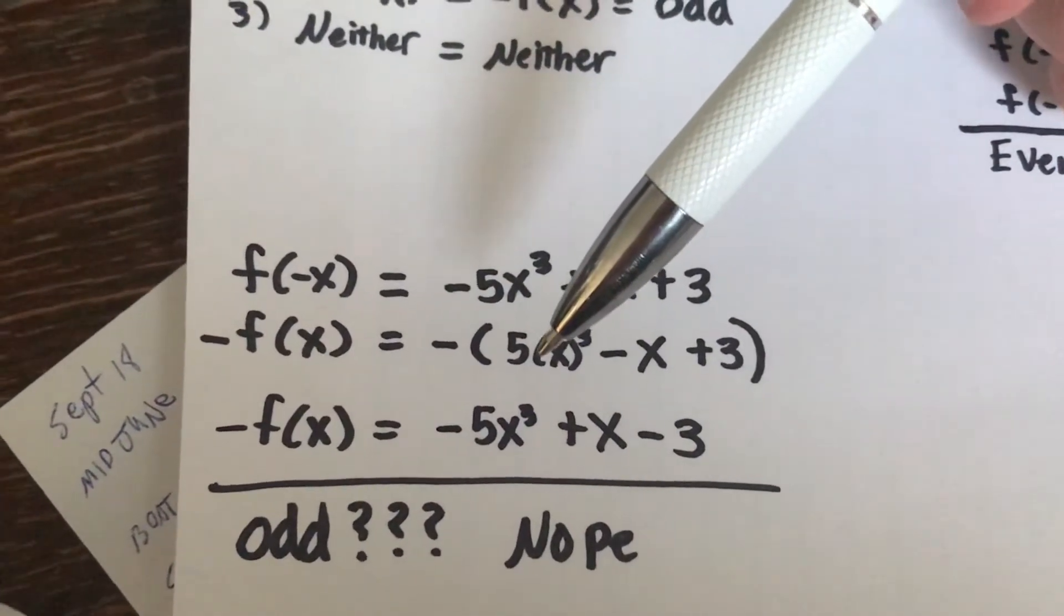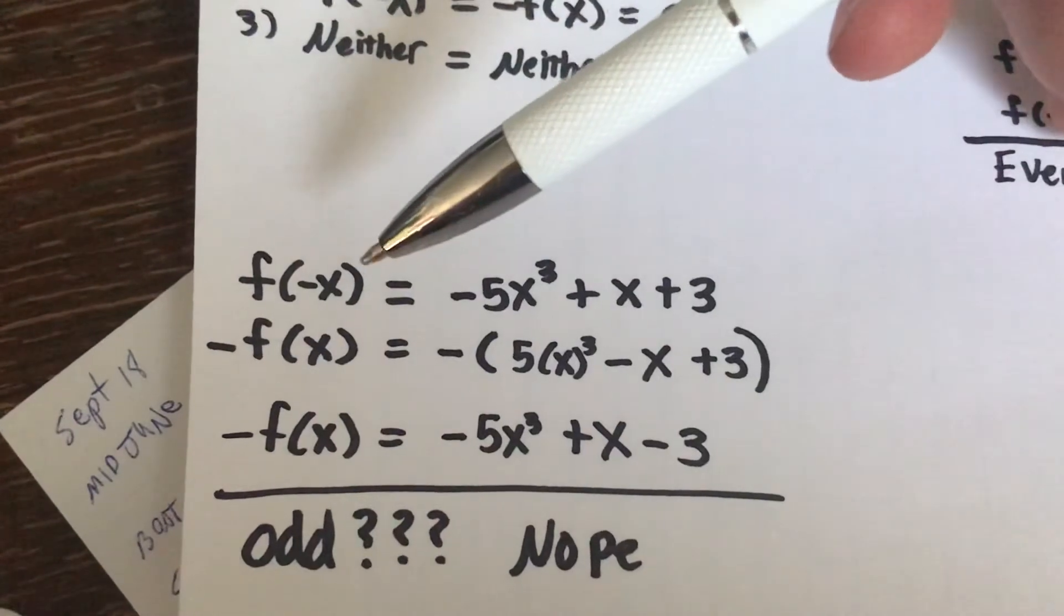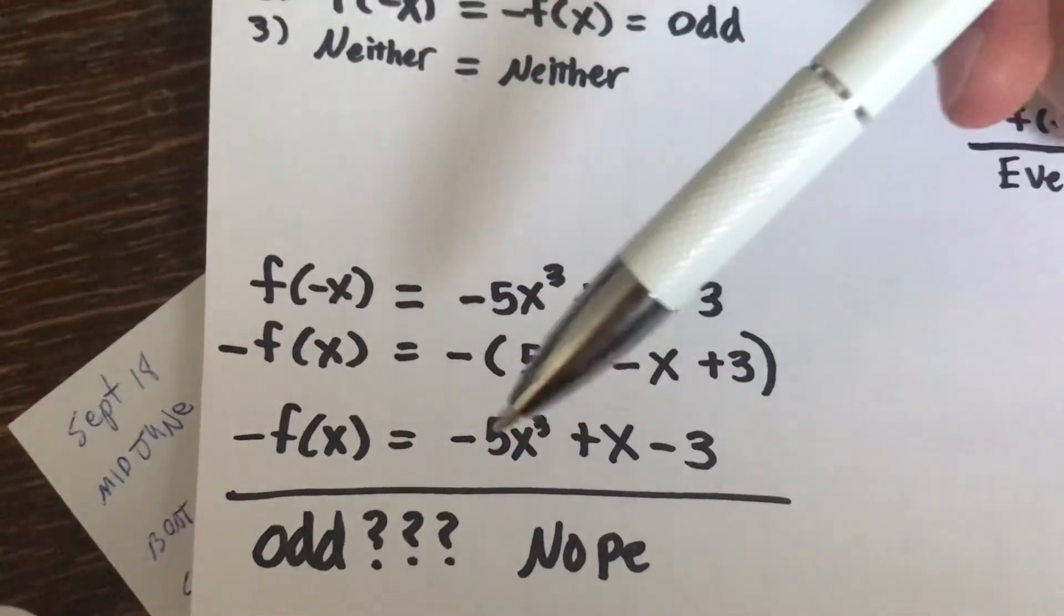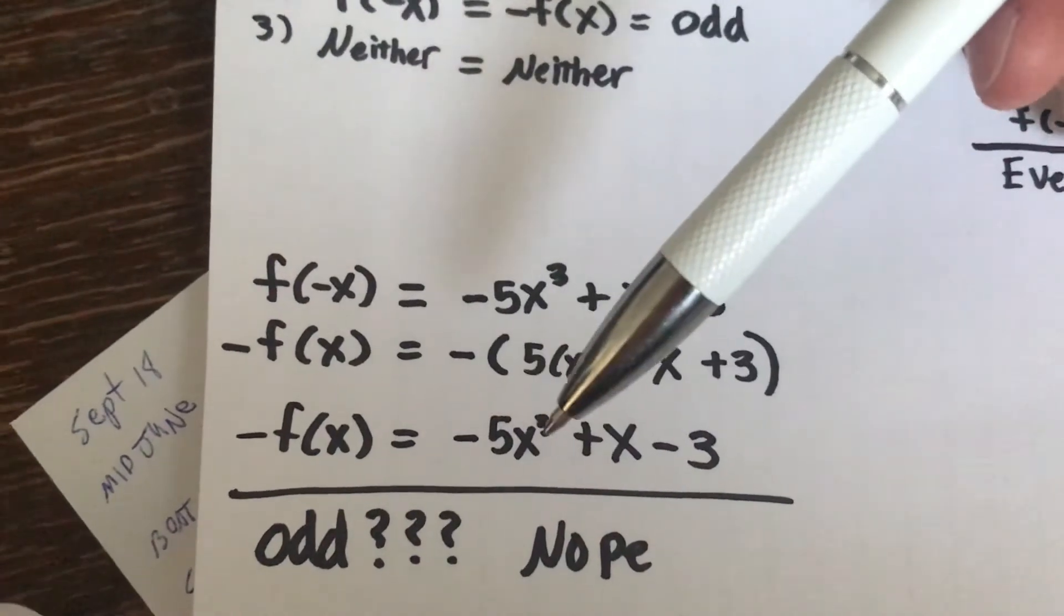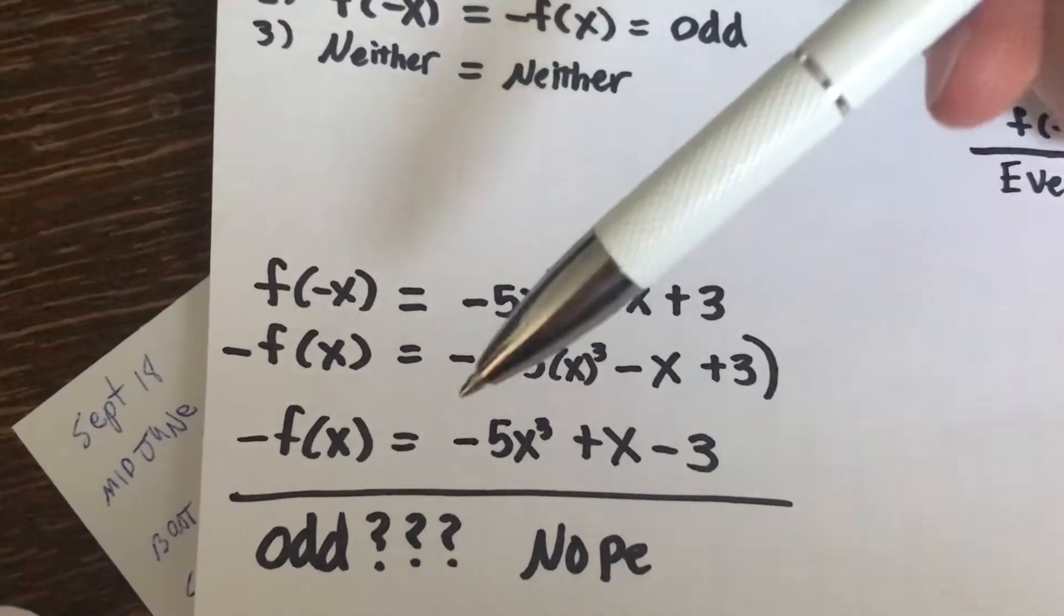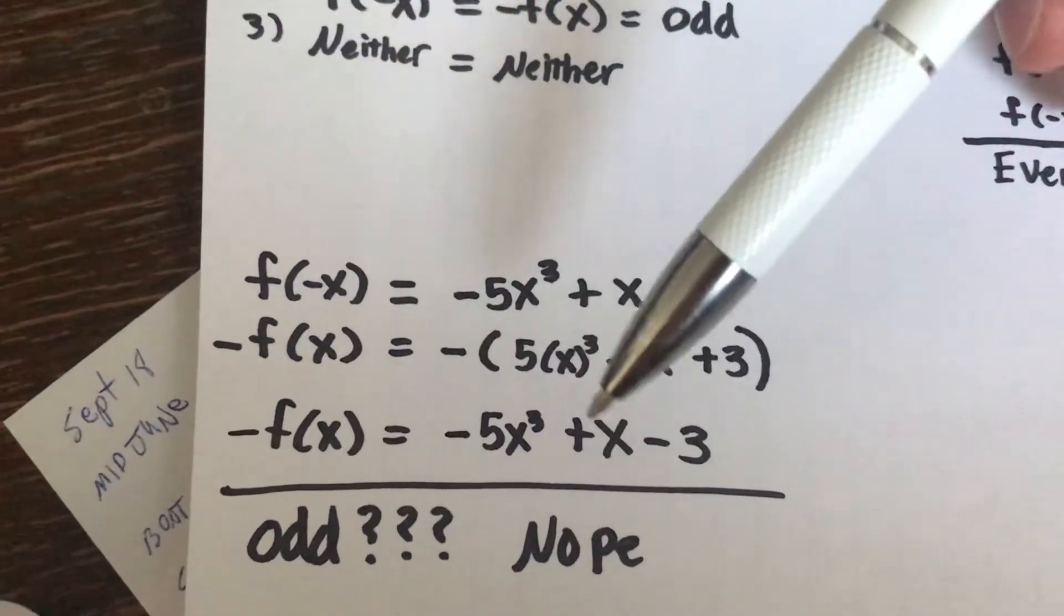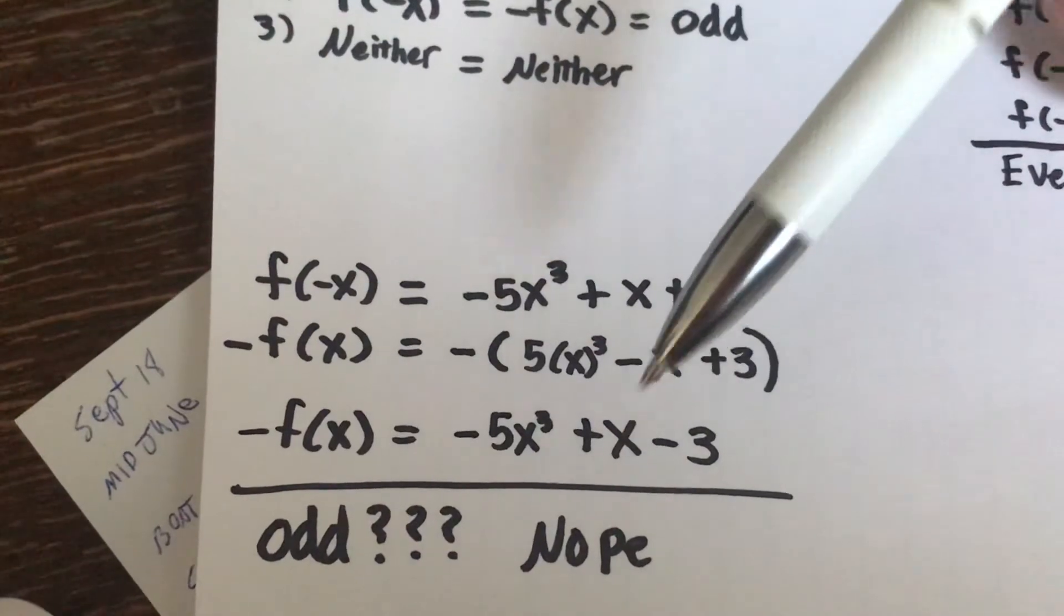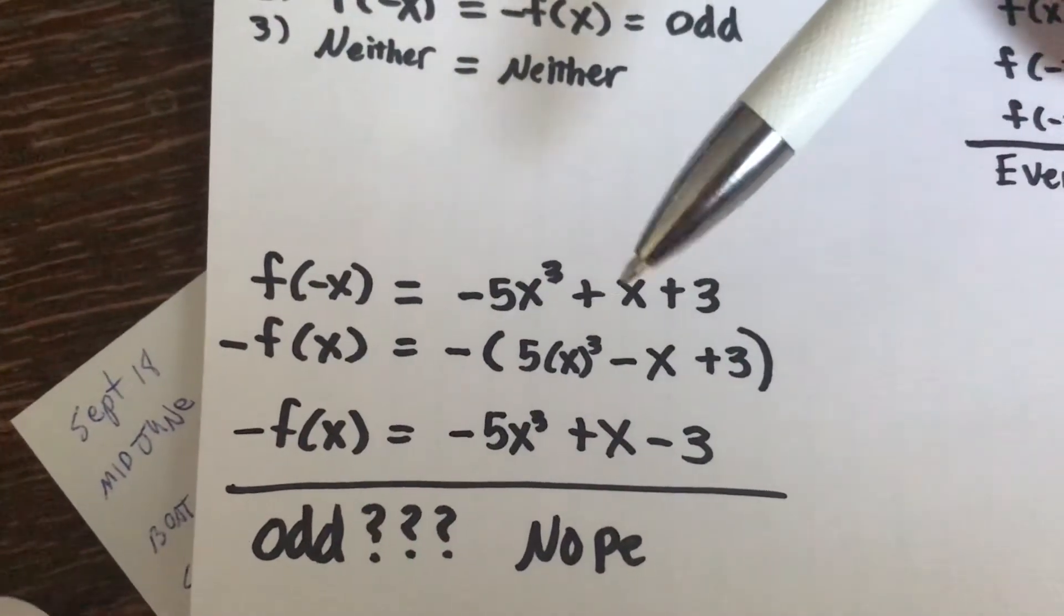And as you can see here, negative 5x cubed matches up with negative 5x cubed, so that looks great. Then we've got a negative times negative x that makes positive x, and that matches up here with a positive x, and so thus far it's looking pretty good.